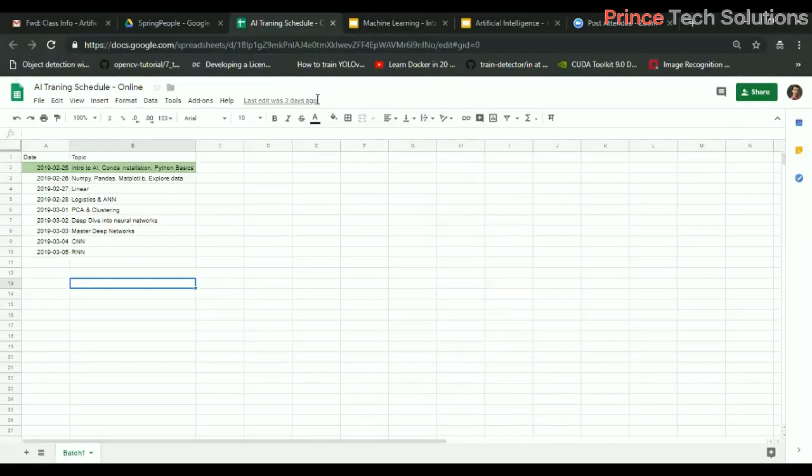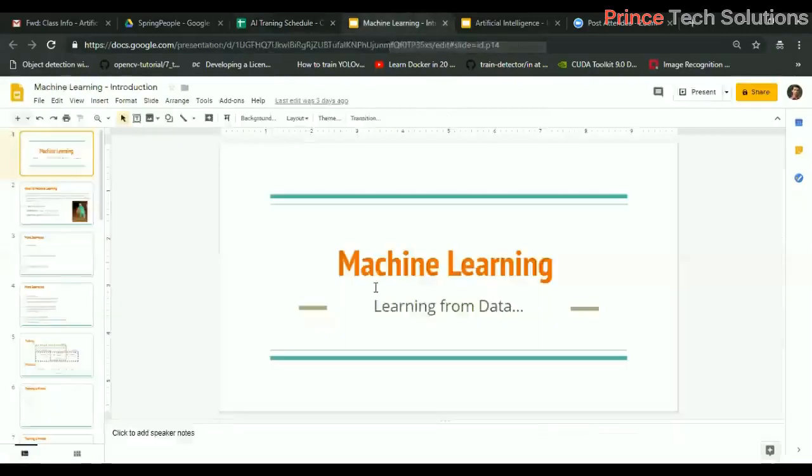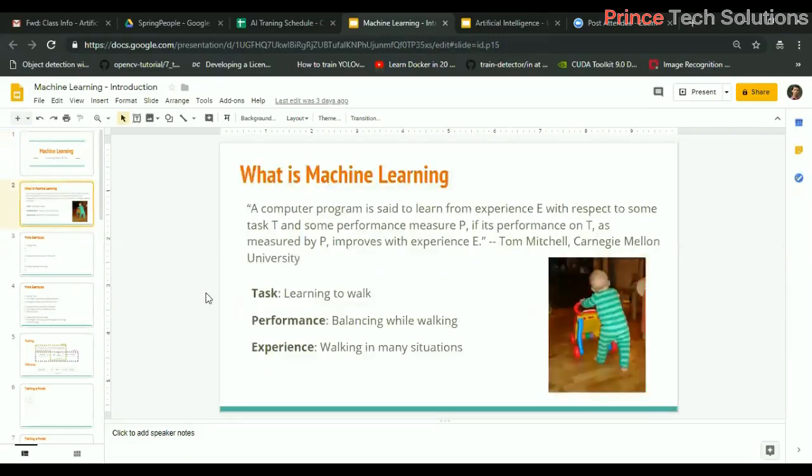Today we will start with machine learning concepts. I'll give you a brief introduction with some slides. Machine learning is purely where data is the key, learning from data. Without data we can't do anything. The amount of data required for machine learning should be accurate. If we give more records to the machine learning model, it will give better accuracy. The data should be more accurate.